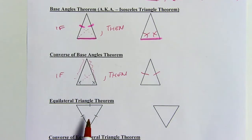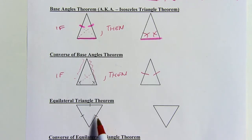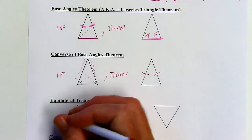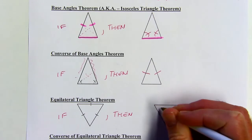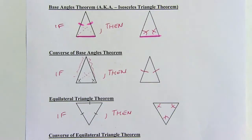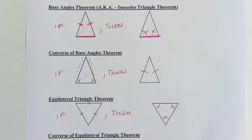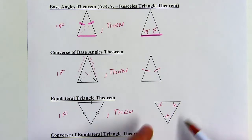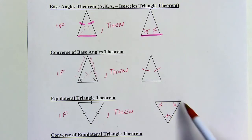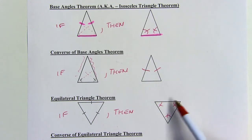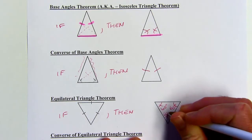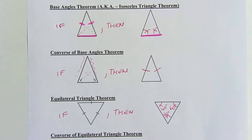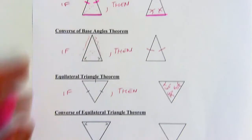An equilateral triangle is just a triangle where all three sides are congruent. If a triangle is equilateral, then it's also going to be equiangular — meaning all three angles are congruent. All three angles have to add up to 180, and if they're all congruent, splitting 180 into three equal slices, it's always going to be 60 degrees, 60 degrees, 60 degrees. That's the only way to cut 180 into three equal parts.